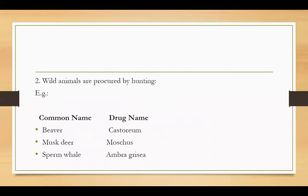Wild animals are procured by hunters. Common names: Testorium, Musca, Sunway, and Regressia.